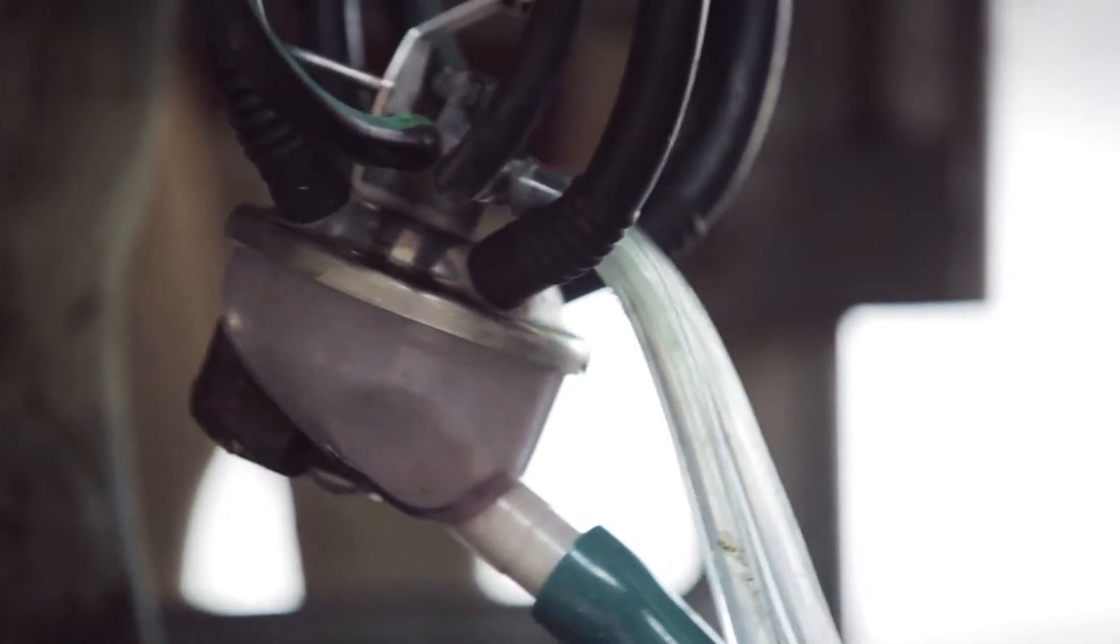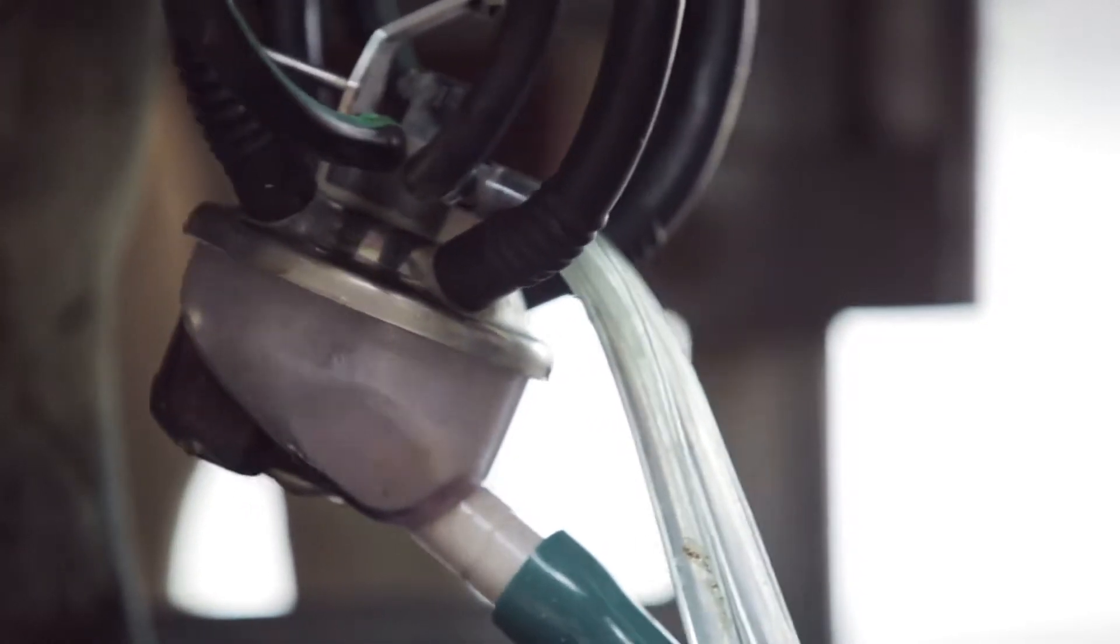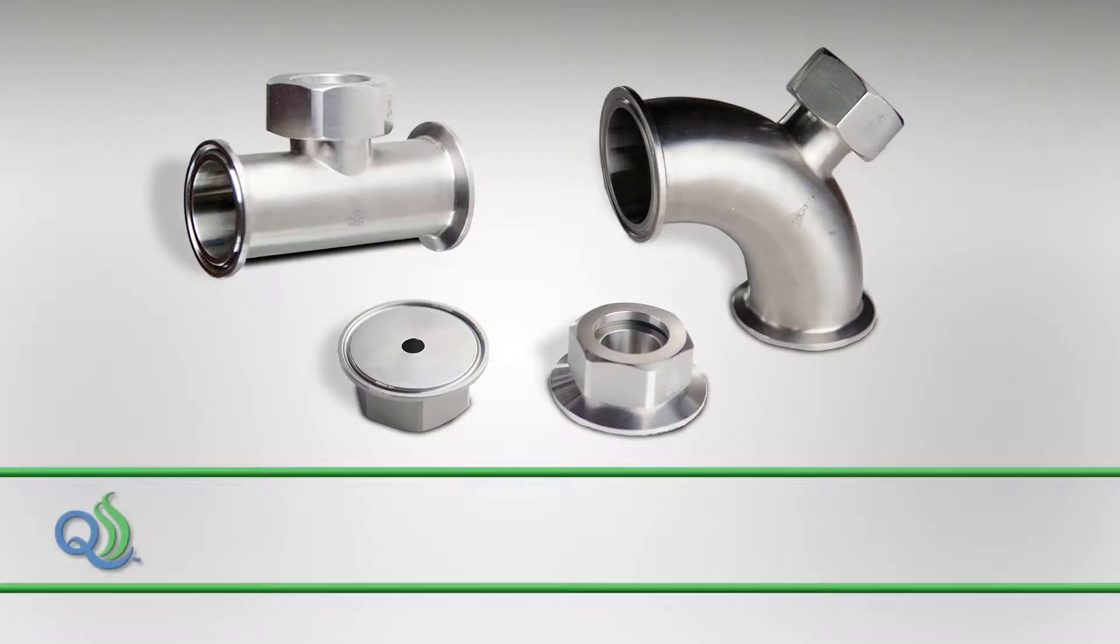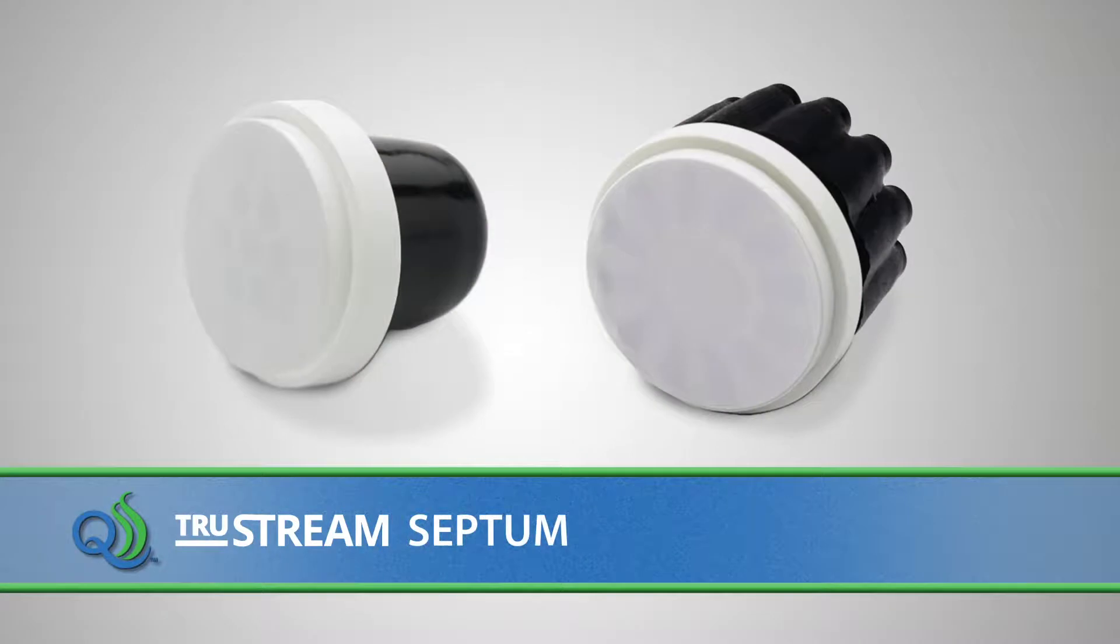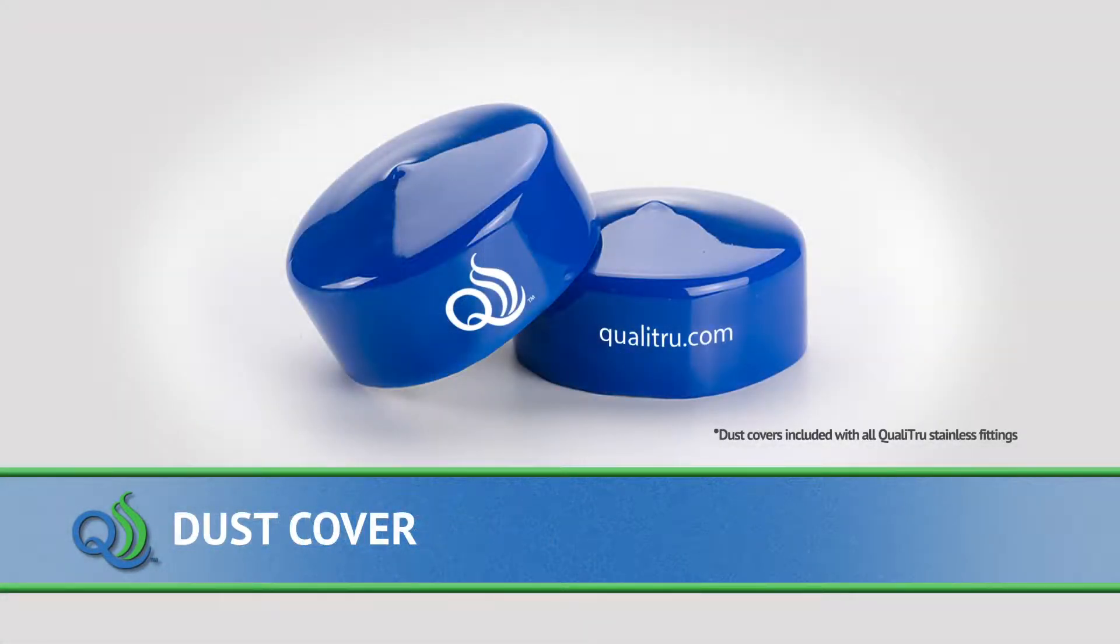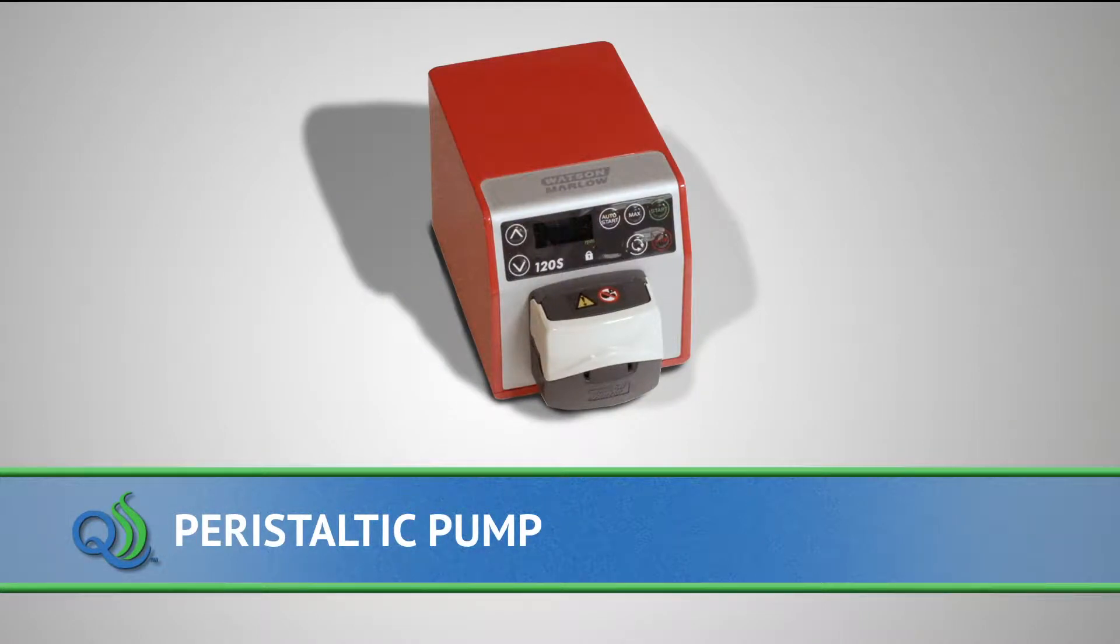The items needed for the QualiTrue In-Line Direct Load Sampling System include a TruStream 7 or TruStream 12 stainless steel port, a 7 or 12 channel QualiTrue sterile septum, and a blue dust cover.